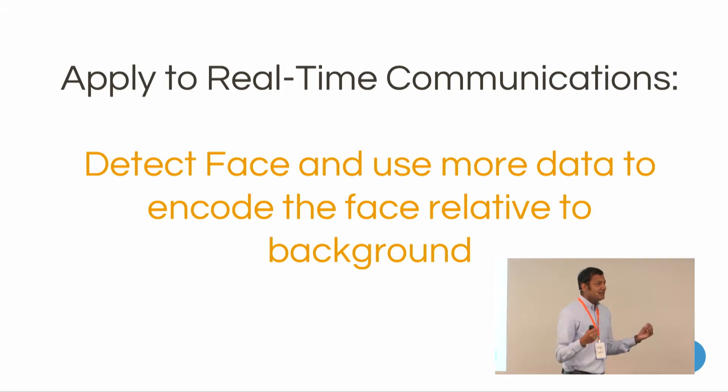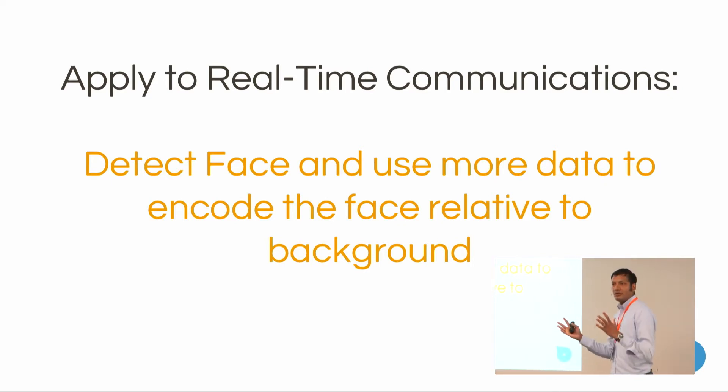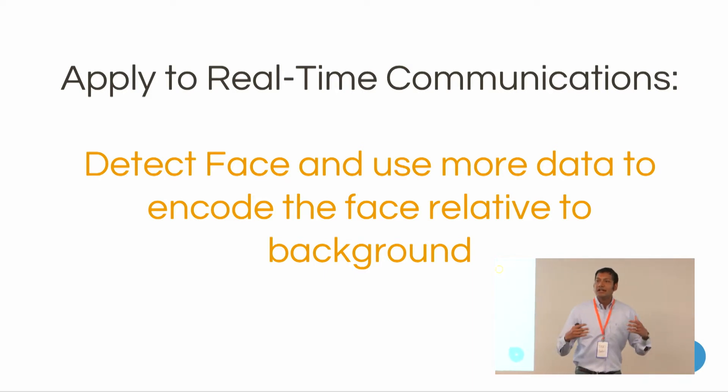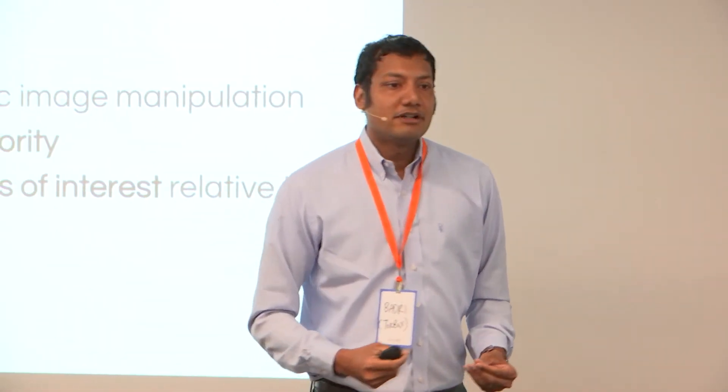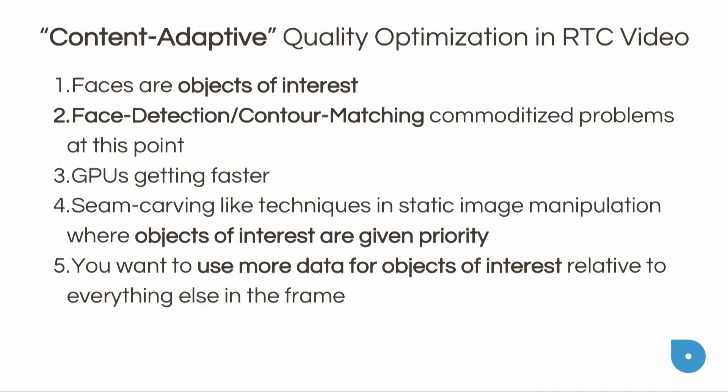The simple observation is: detect the face and use more data to encode the region of the face relative to the background. In a case where you want to throttle down quality, you'd rather have a fuzzy background but a clear face than uniformly degrade the entire experience. The first intuition is that in a face-to-face call, faces are objects of interest. The second observation is that face detection, contour matching, and edge detection have all become commoditized through machine learning and deep learning, in ways not previously possible.